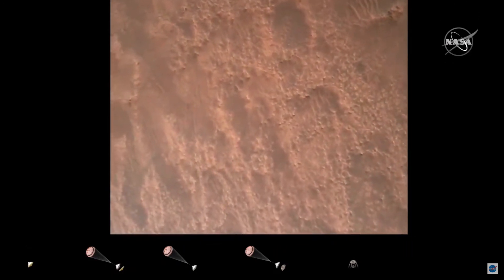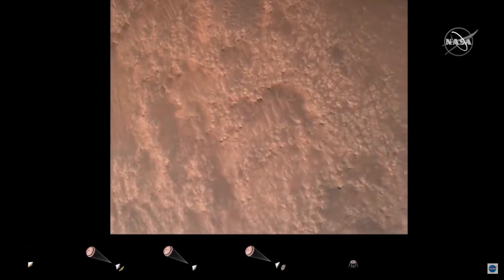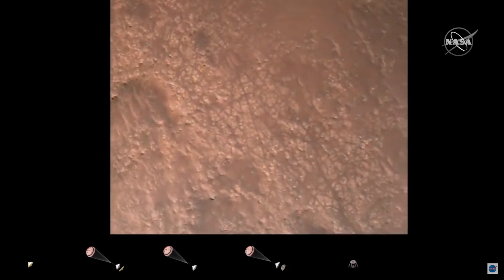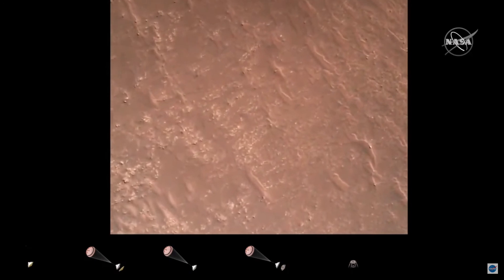Entering safety. Bravo. We have completed our terrain relative navigation. Current speed is about 30 meters per second at an altitude of about 300 meters from the surface of Mars.